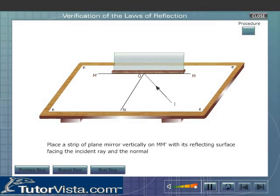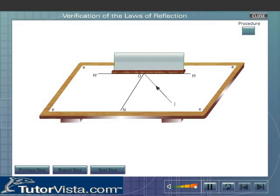Place a strip of plane mirror vertically on MM' with its reflecting surface facing the incident ray and the normal. Fix two pins P and Q on the incident ray IO.